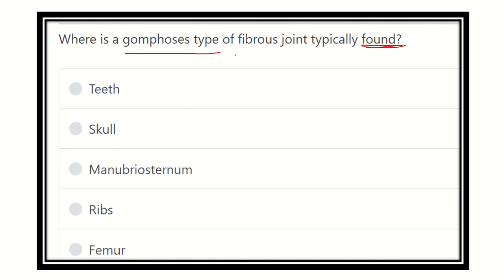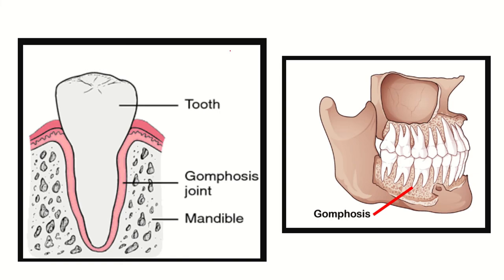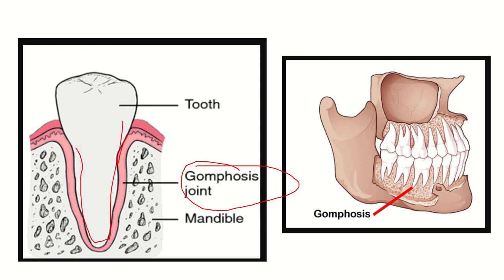We have to find out this type of joint — the gomphosis joint. First of all, we can see this is a tooth. Here, it is a tooth and this is the mandible, and we can see this is the gomphosis joint. This joint is located between the tooth and the mandible, or tooth and the upper jaw.